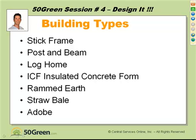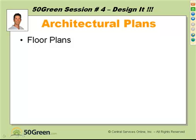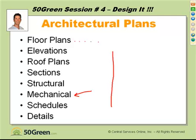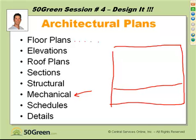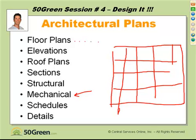We talked about building types — a number of different building types. For architectural plans, your basic beginning starts with the floor plans, which literally are what they say: the actual floor plans, one for each floor, first floor, second floor. The mechanical plan, or the structural plan, has many pages of structural details. You will get a big sheet divided up into four or five rows and columns, and each one has a detail.